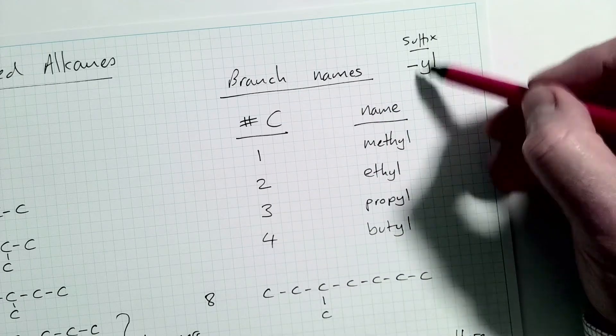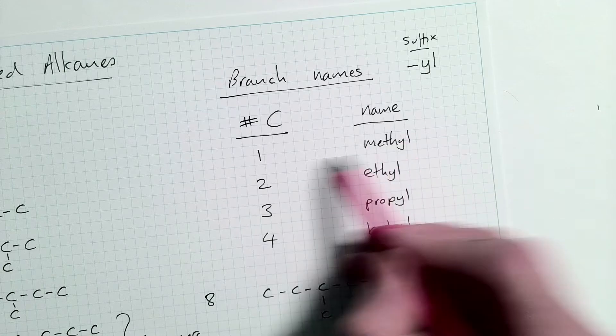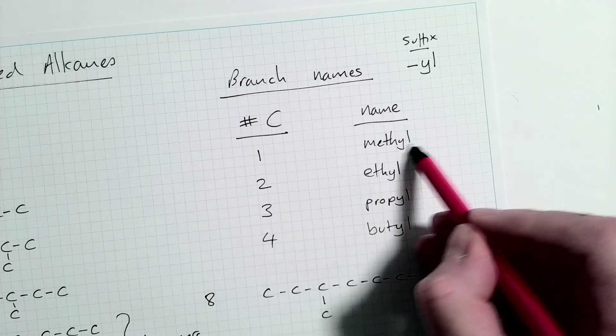So we are going to add another prefix onto the base molecule that represents a single carbon in a branch. And the names of those single carbons and branches are up here. So the branch names, we use the suffix YL. So we take our one carbon, which is meth, remember from the previous lesson, meth, methyl.